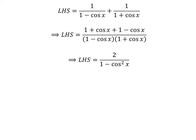We know 1 minus cosine of x times 1 plus cosine of x is equal to 1 minus square of cosine of x, and cancelling out plus cosine of x and minus cosine of x gives us left-hand side of the identity is equal to 2 upon 1 minus square of cosine of x.